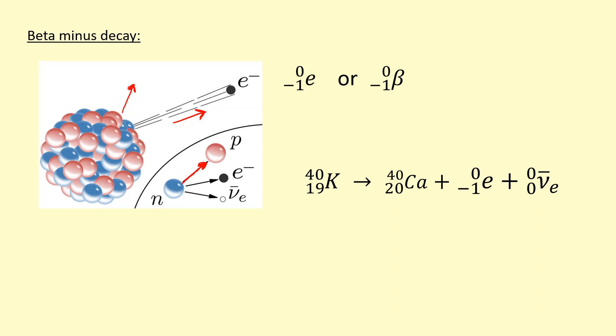You can see the number of protons has actually increased, but the mass number hasn't changed. What's happened is the neutron has turned into a proton, and that proton has stayed inside the nucleus, so the total number of nucleons hasn't changed.